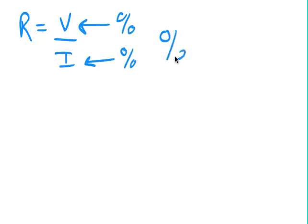You can then calculate the percentage uncertainty in R by adding the percentage uncertainty in V to the percentage in I.